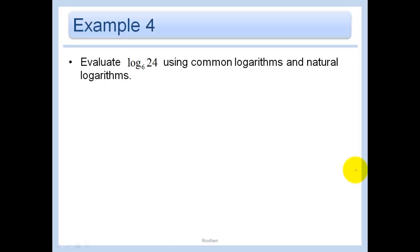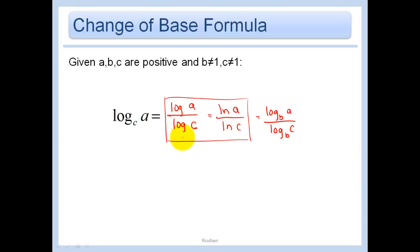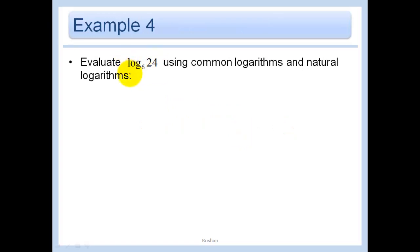now it says to evaluate log base 6 of 24 using common logarithms and natural logarithms we are going to use our calculator for this but we're thinking that we should get the same answer right because i just showed right here that log of a over log of c is equal to ln a over ln c so anyway i'm assuming that i'm only going to get one answer for the same problem right otherwise it wouldn't make any sense